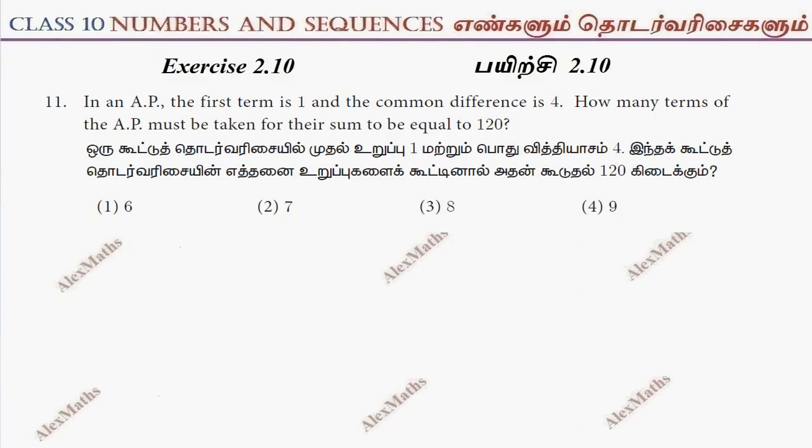Hi students, this is Alex here. Exercise 2.10, question number 11. In an AP, the first term is 1, so a equals 1. Common difference is 4, d equals 4.